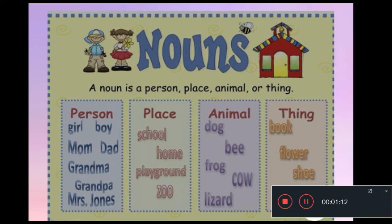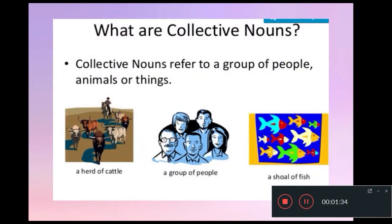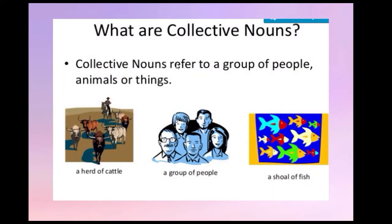But when we want to talk about collective nouns, we refer to a group of people, a group of things, or animals, okay? Now let's move on, guys, to the collective nouns. As you can see here, what are collective nouns? Collective nouns refer to a group of people, animal, or thing. We are going to look at the difference between a noun and collective nouns.